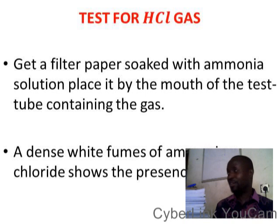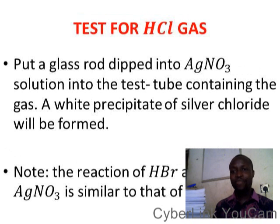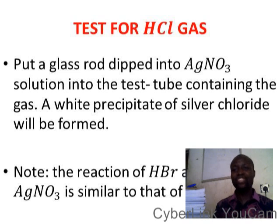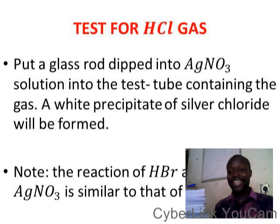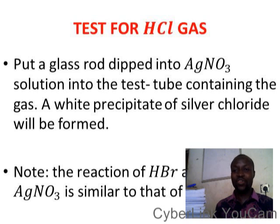You can do this experiment in collaboration with your teacher in your chemistry lab. For a second test for hydrogen chloride gas, dip a glass rod into AgNO₃ solution, then place the rod inside the test tube containing the unknown gas. There will be a white precipitate of silver chloride formed, which confirms that hydrogen chloride gas is present.